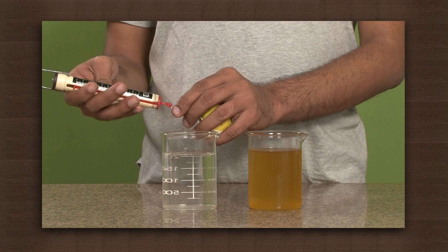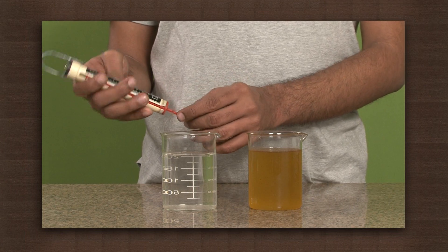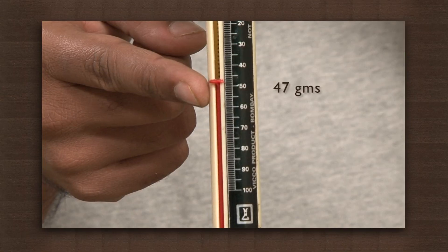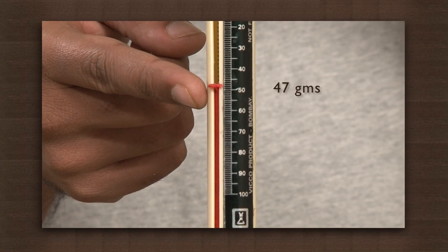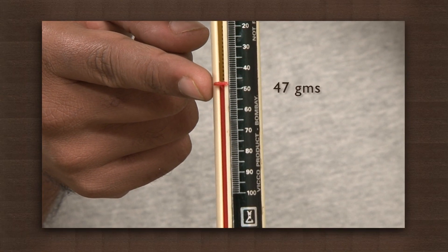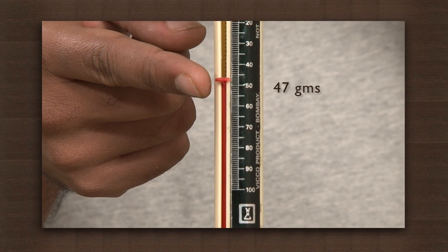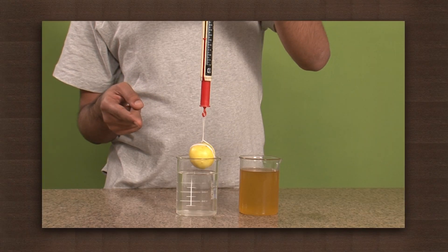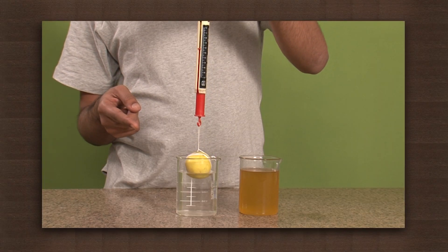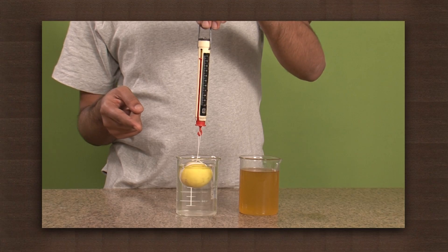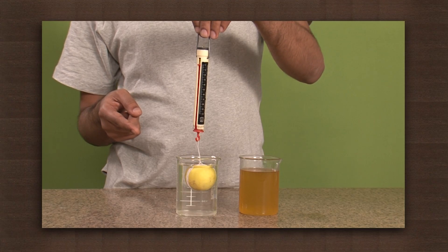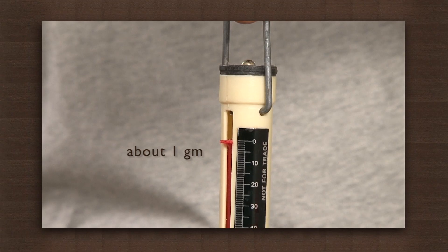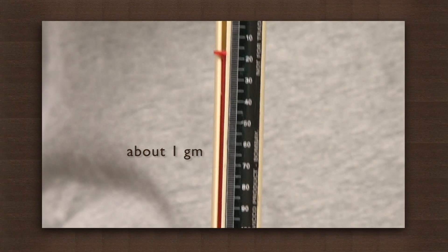We will first weigh this lemon in the spring balance. It weighs 47 grams. Now we will immerse the lemon in water. The weight in water is 1 gram.